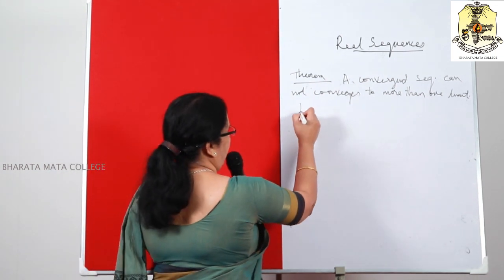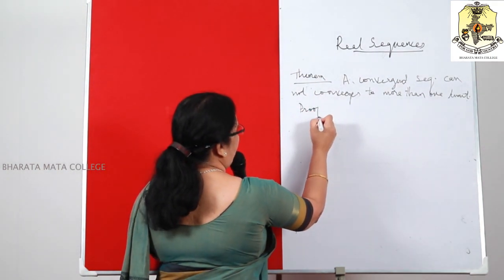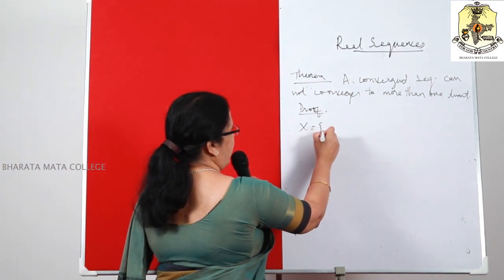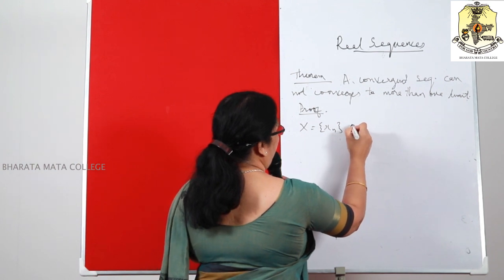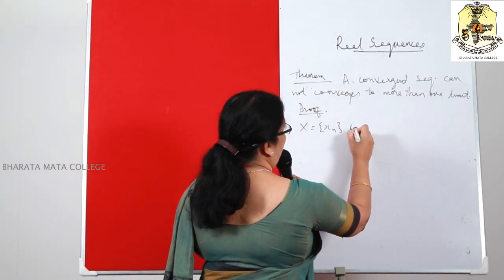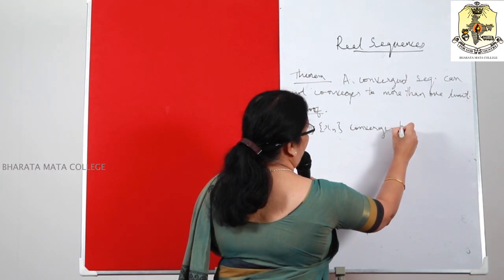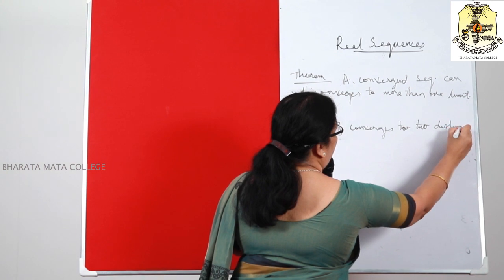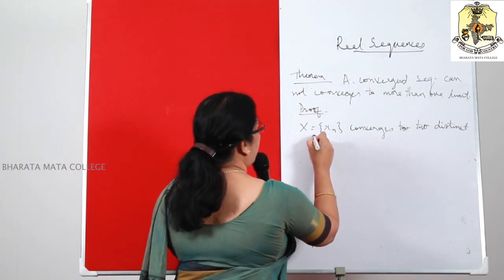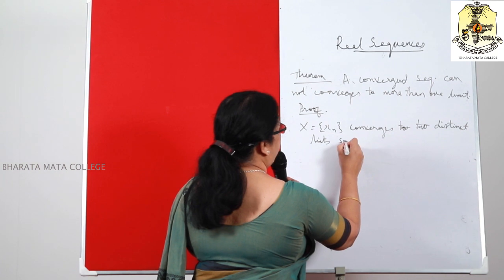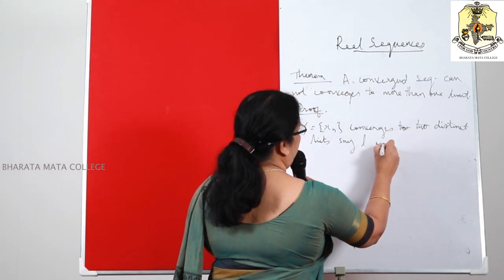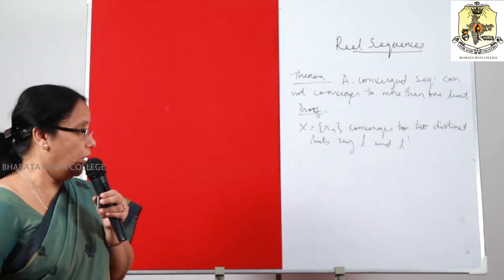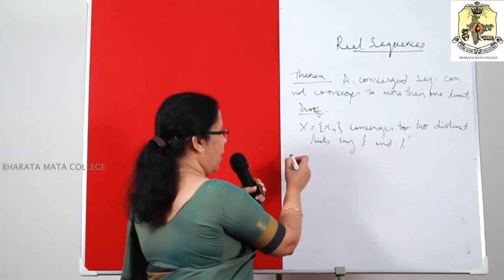How to prove this statement? Let us see. Suppose we assume the contradiction: suppose the sequence X = {X_N} converges to two distinct limits, say L and L dash, where L and L dash are some distinct real numbers.